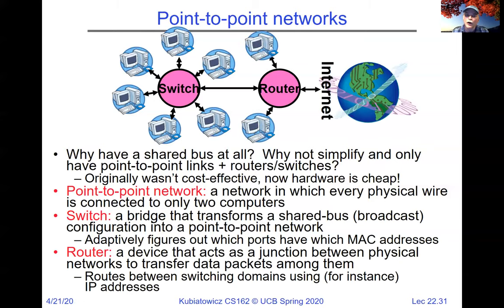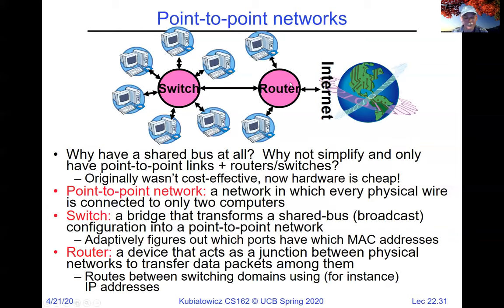A router is different from a switch — it transfers packets from one switch domain to another. When you go across a routing domain, packets are not routed by MAC address. This is the point at which IP comes into play.